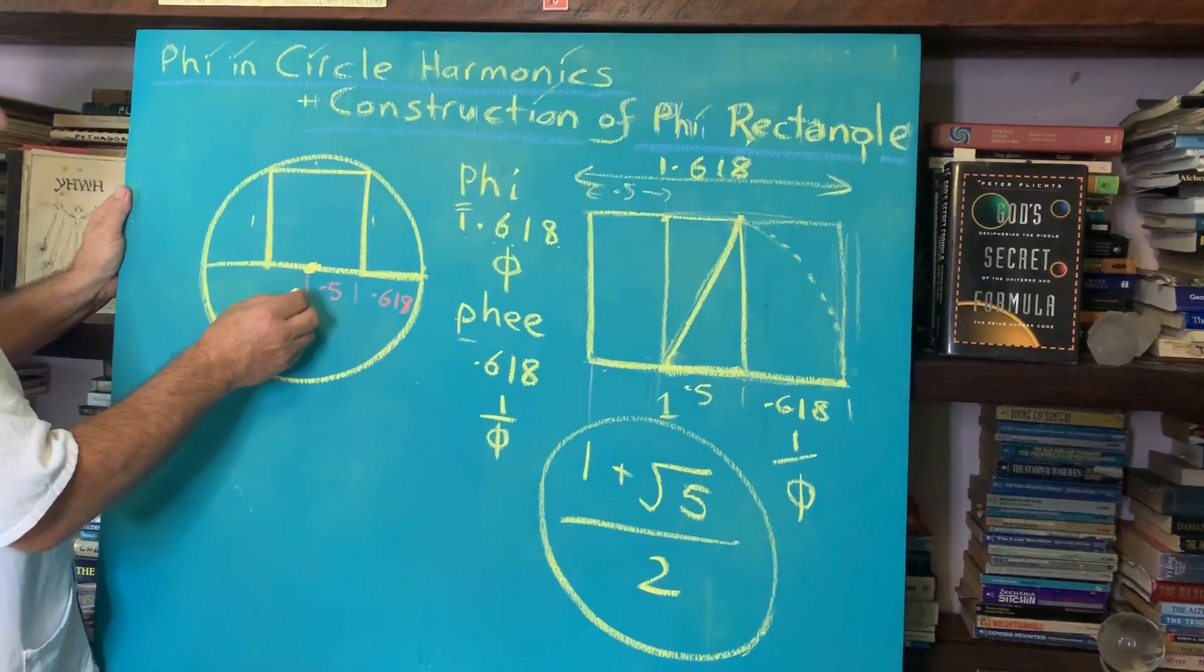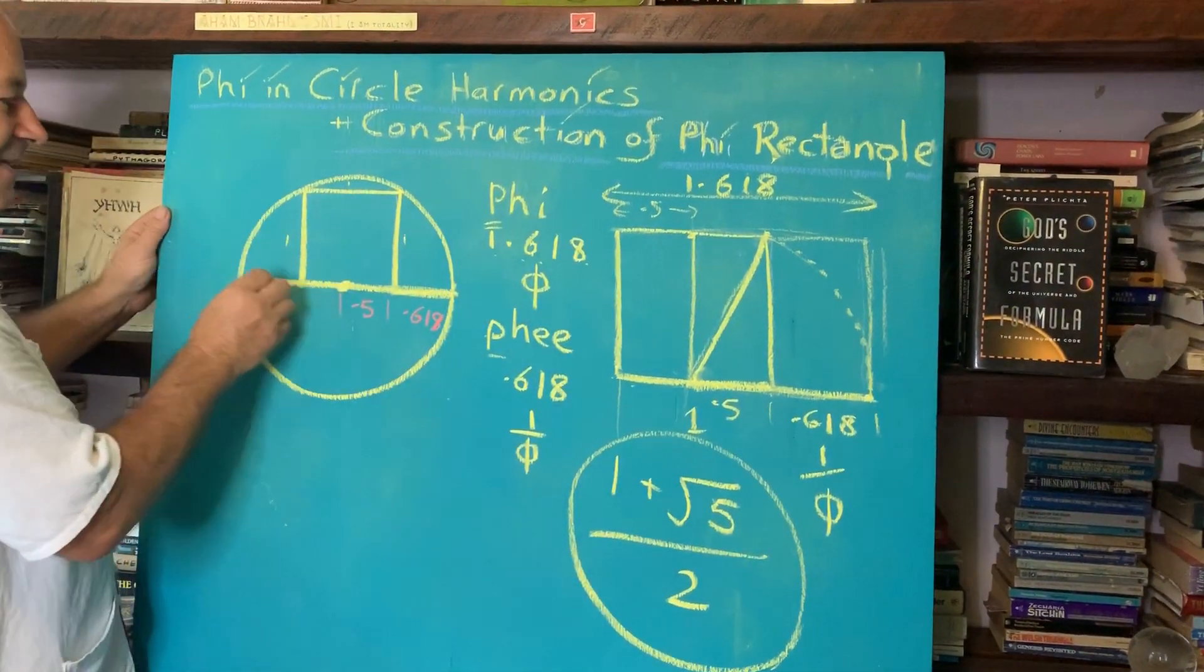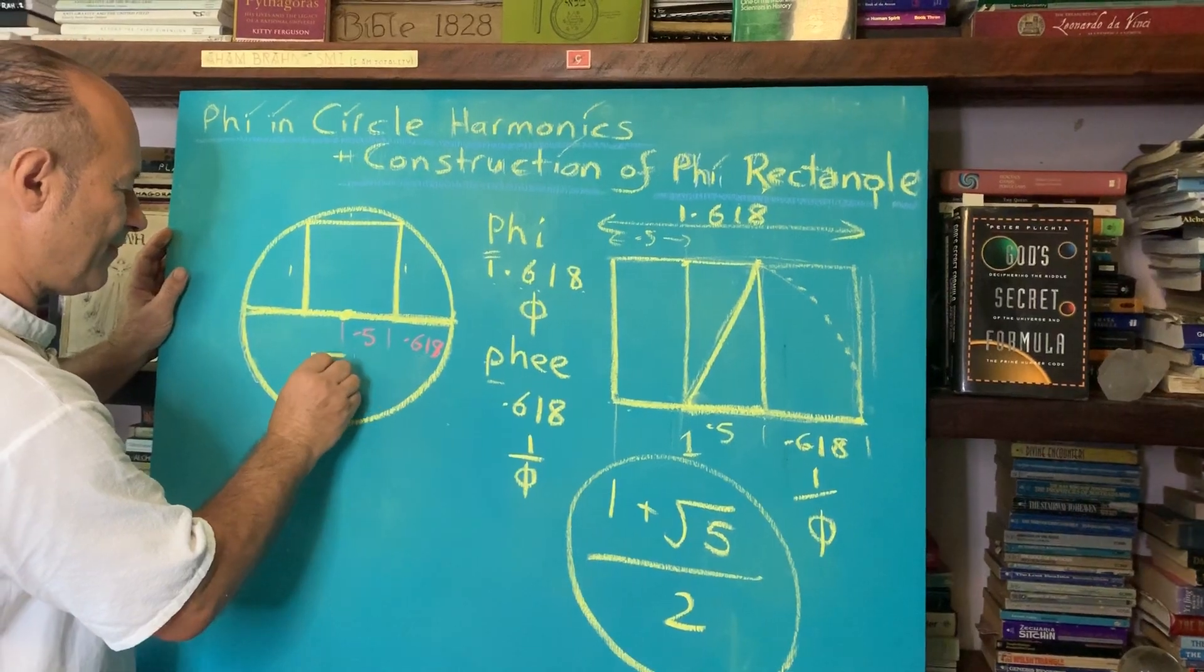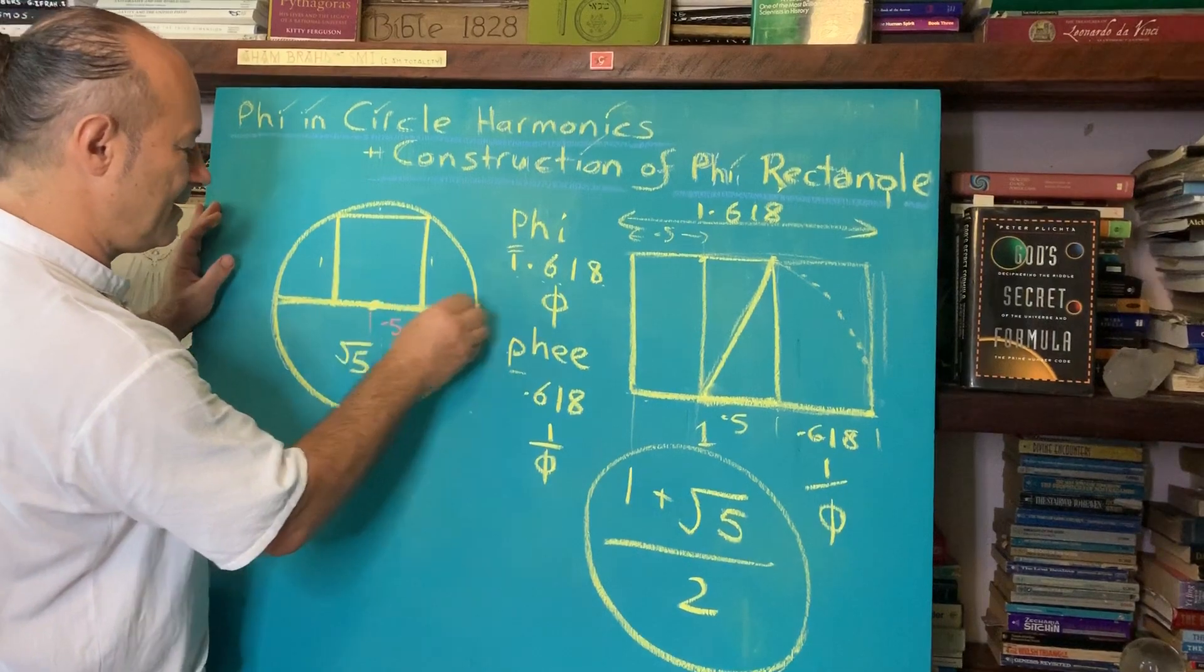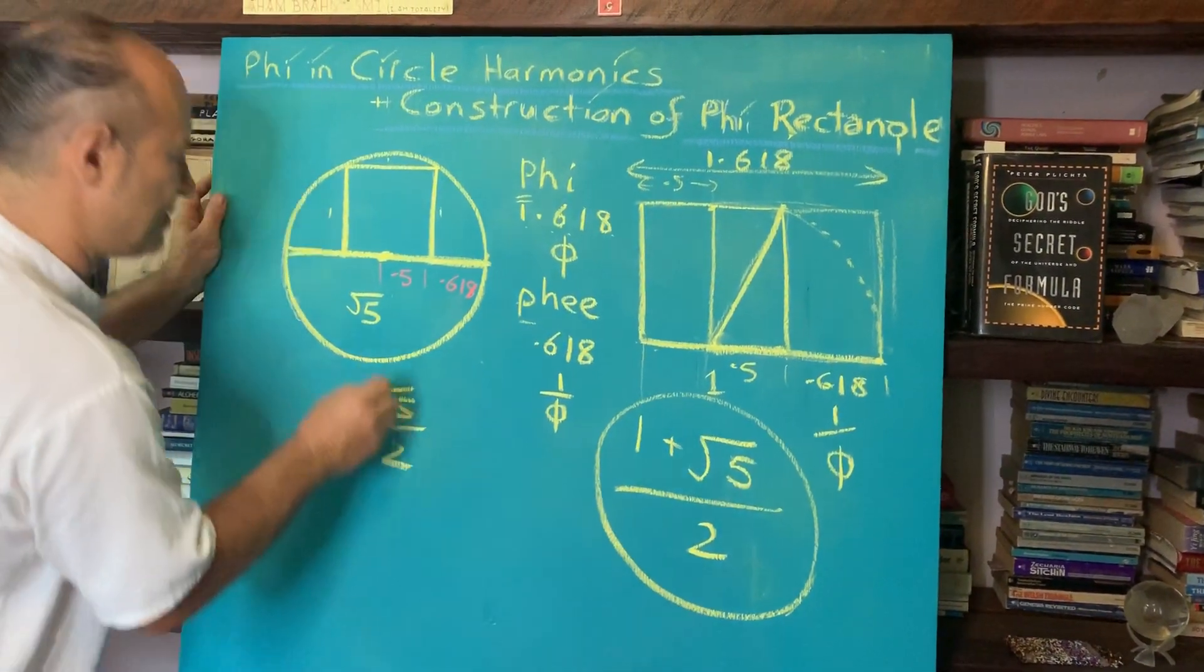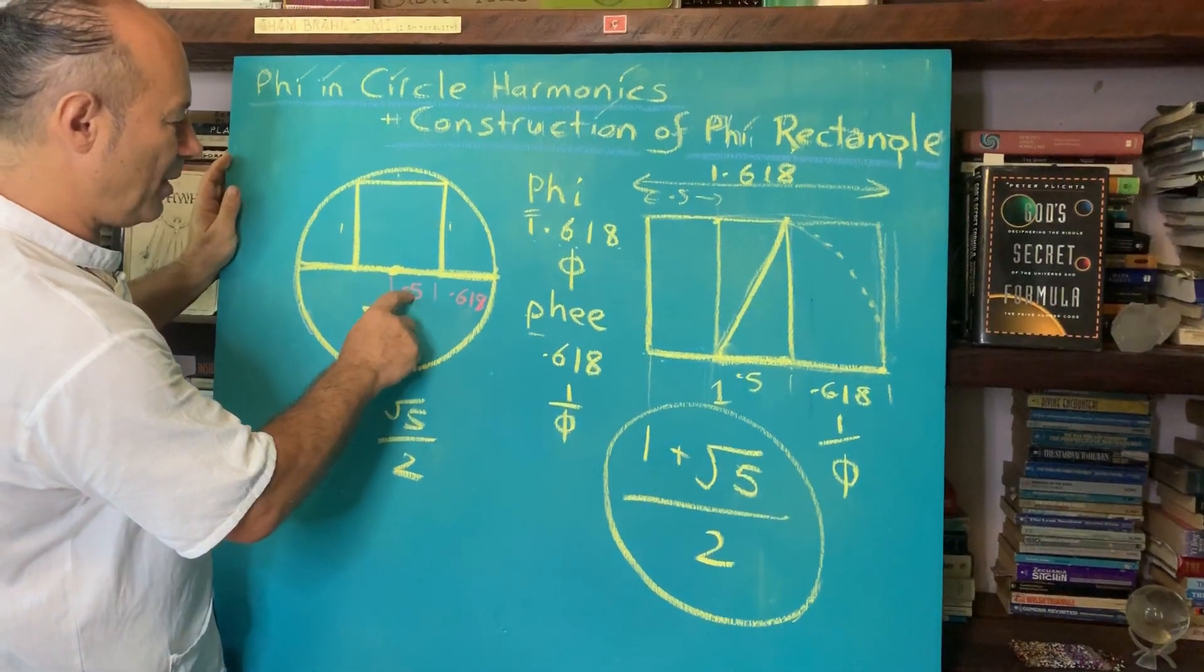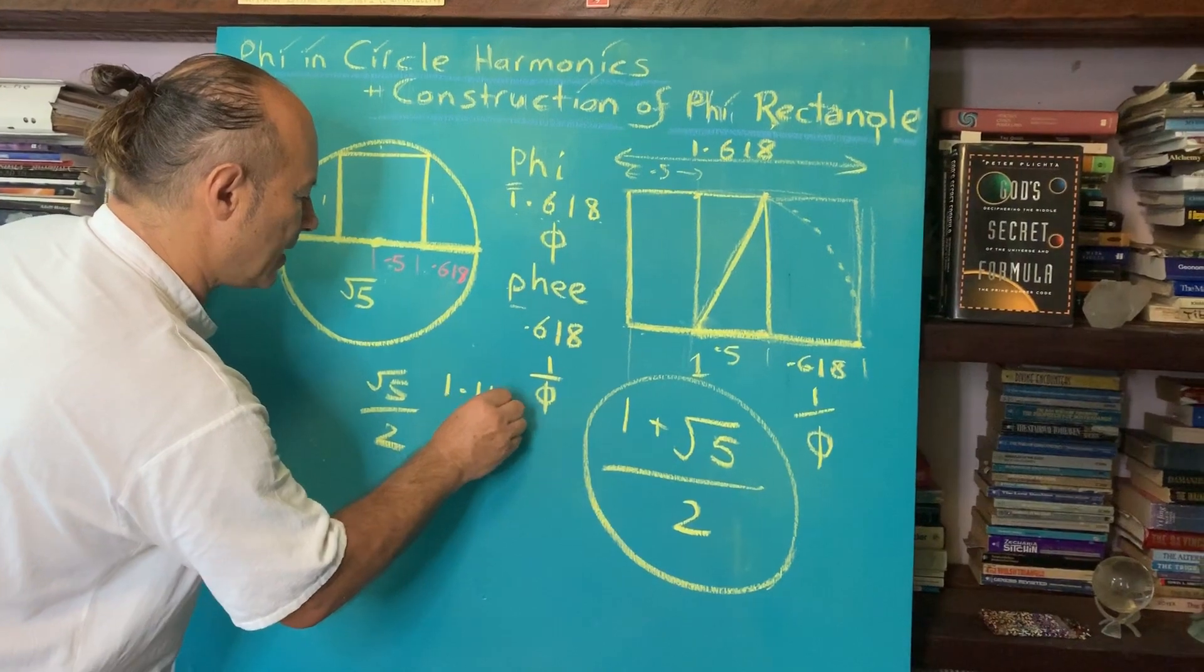This also happens to be the diameter of this circle. For this golden ratio to appear, the diameter of this circle is root 5, and the radius is root 5 divided by 2. Root 5 divided by 2 is 0.5 plus 0.618, which is 1.118.